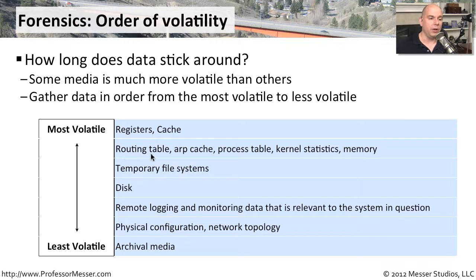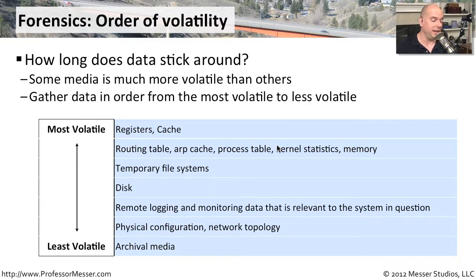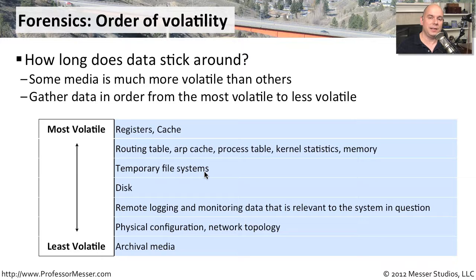A routing table, an ARP cache, a process table, and memory information are also not quite as volatile as something in your CPU cache, but they're only around for a short period of time and are often updated. A little less volatile is temporary file systems — you could power down a computer and preserve at least some of that, but if your operating system is running, it often overwrites some of those temporary file systems.